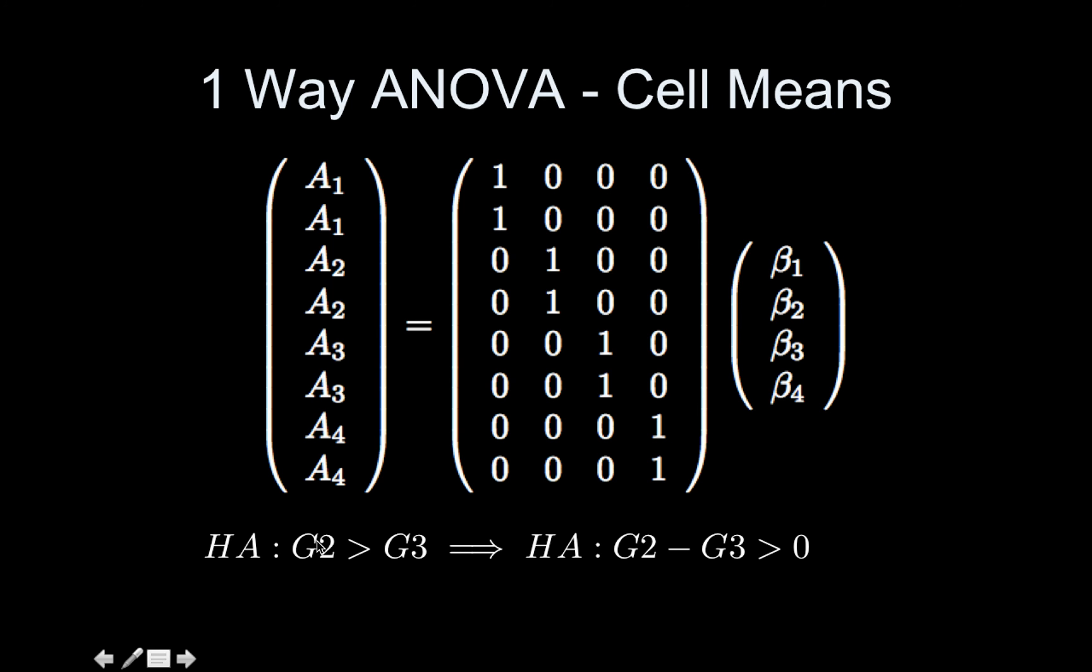If we would like to test the alternative that group 2 is larger than group 3, again we want our inequality to point at zero. I'm going to subtract group 3 from both sides and I get group 2 minus group 3 greater than zero. That contrast will simply be 0, 1, minus 1, 0, because if I multiply this contrast vector times this beta vector, I get beta_2 minus beta_3, which is the mean for group 2 minus the mean for group 3. We are having to do more of this translation between statements about means and converting that to betas.